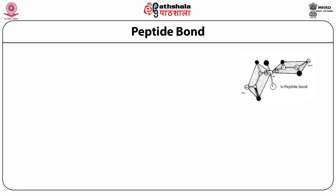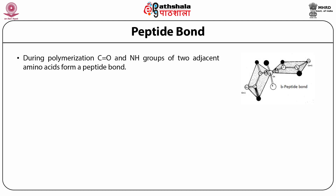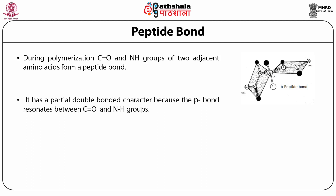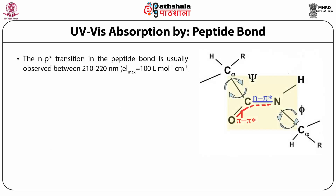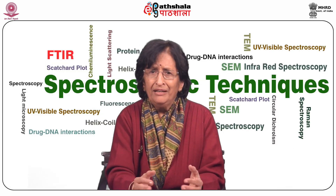The peptide bond properties are explained further. The C=O and NH group of two adjacent amino acids form the peptide bond and have partial double-bond character because the pi bond resonates between the C=O and NH group. The n→π* transition in the peptide bond is usually observed between 210 and 220 nanometers with epsilon at lambda max equal to 100, shown in blue. The main π→π* transition is around 190 nanometers with epsilon equal to 7000, shown in red.